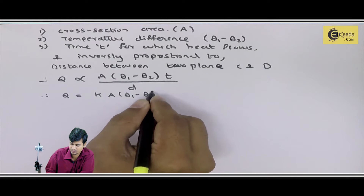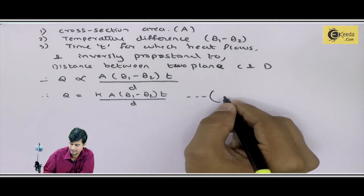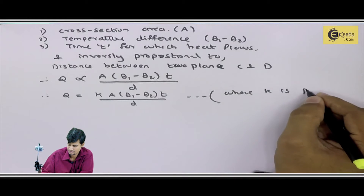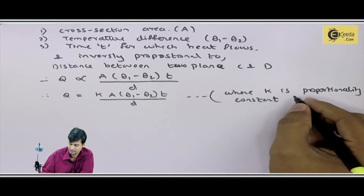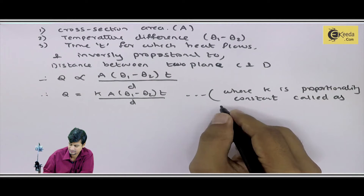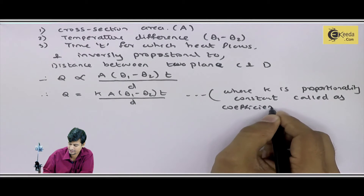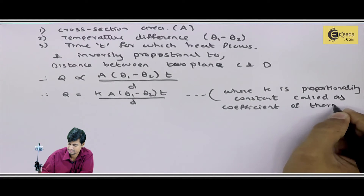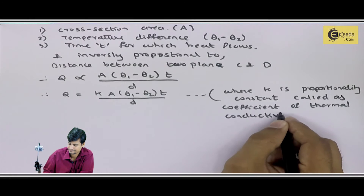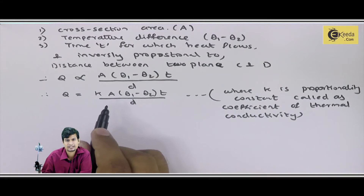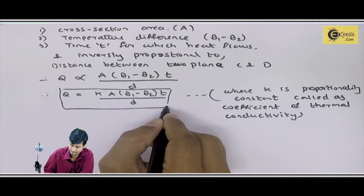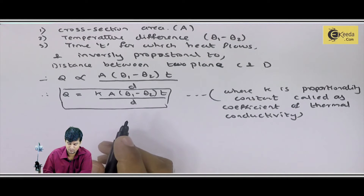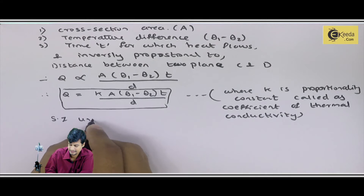Therefore: Q = K × A × (theta 1 − theta 2) × T / D. Here, K is the proportionality constant called the coefficient of thermal conductivity. The SI unit of heat is Joules.